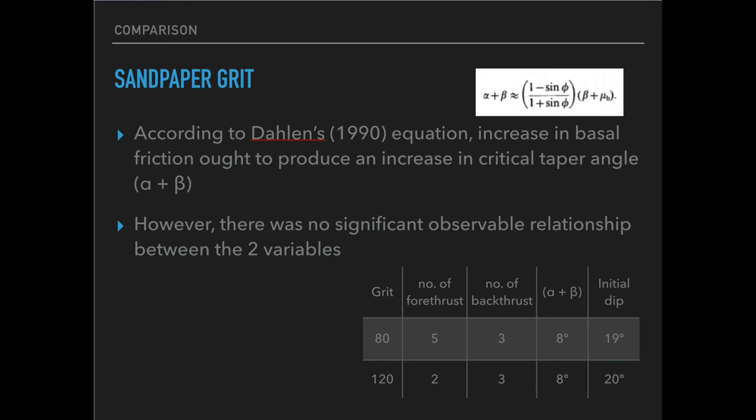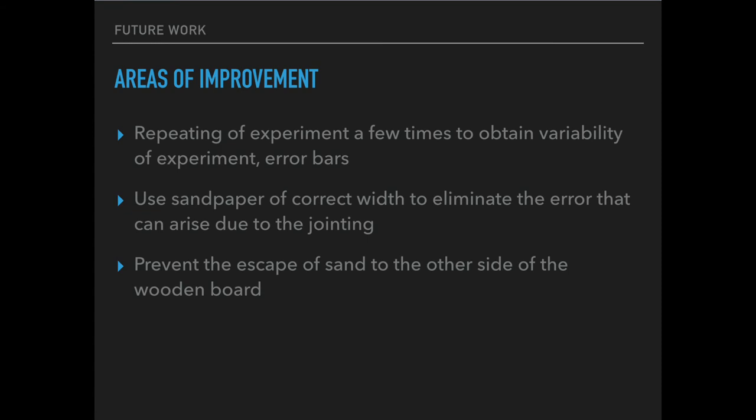As for sandpaper grid, according to Dahlen's equation, an increase in basal friction ought to produce an increase in critical taper angle. However, there was no significant observable relationship between the two experiments when sandpaper grid was the only variable. Areas of improvement: this experiment can be repeated a few times to establish error bars. The sandpaper used can be of correct width to eliminate attachment errors. The sand can be prevented from escaping by attaching the wooden board more securely to the base of the sandbox.